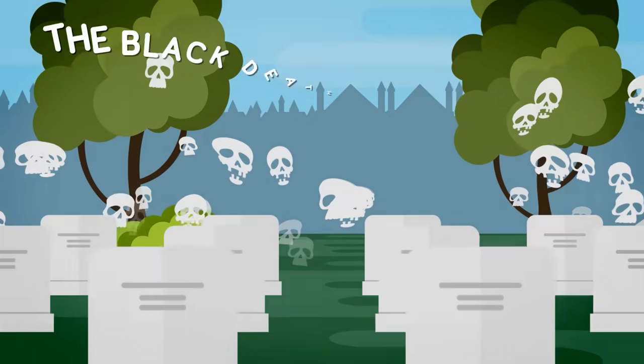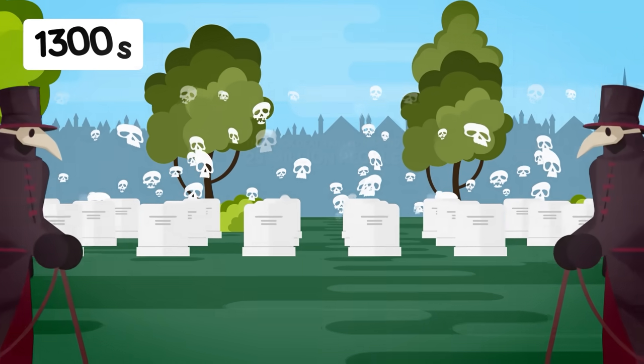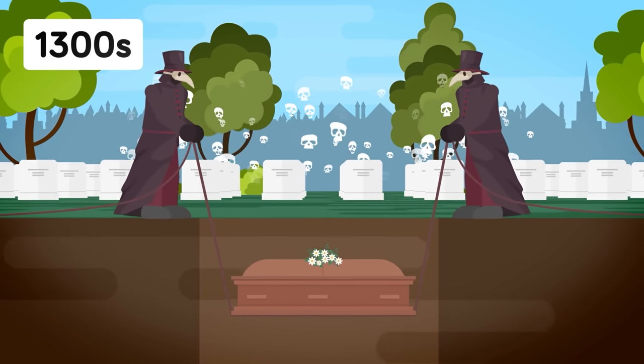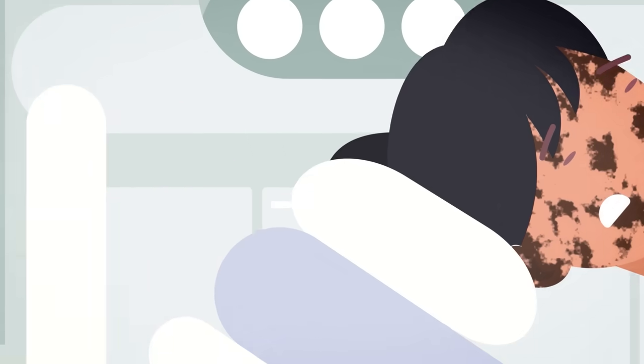The Black Death killed around one-third or 25 million people in Europe during the 1300s. This is a staggering number, which is why the bubonic plague was once the most feared disease in the world. The crazy thing is that the bubonic plague is still around today.